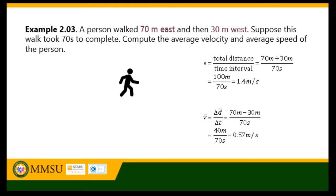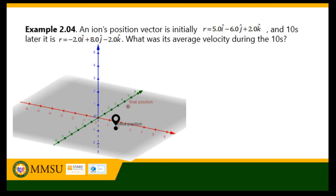For average velocity, you need to consider displacement — that is, considering the direction of movement: 70 meters minus 30 meters for displacement, divided by 70 seconds as time. Time is a scalar quantity that does not reverse as you move backwards, so the total average velocity is 0.57 meters per second.